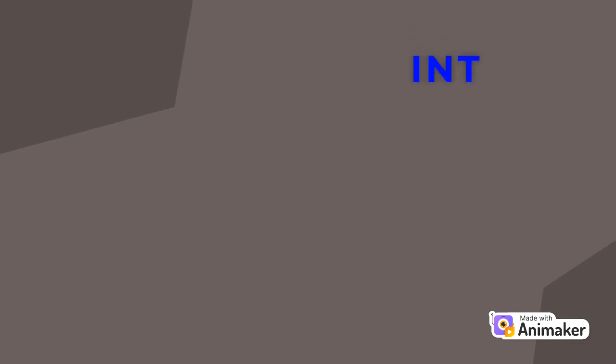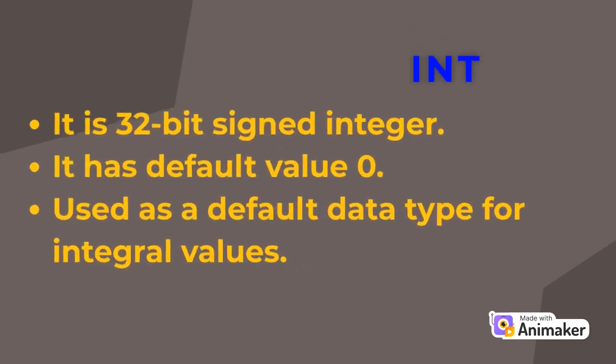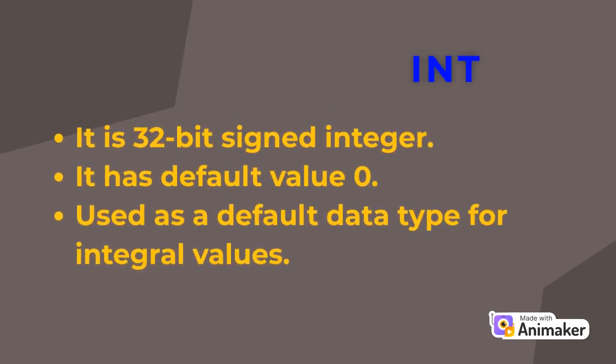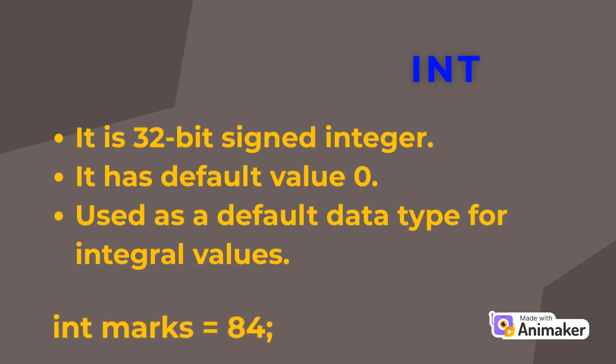The integer data type is a 32-bit signed 2's complement number. Its default value is zero. The integer data type is generally used as a default data type for integral values unless there is a problem about memory. For example: int marks = 84.